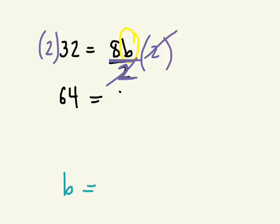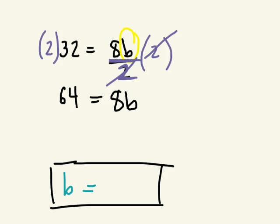So 64 is equal to 8 times B. Now what do I do to isolate B? How do I undo this? What do I have to get rid of?